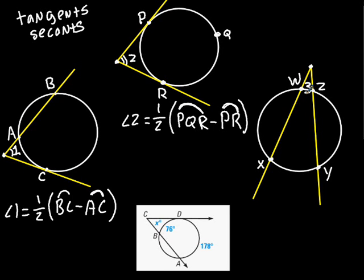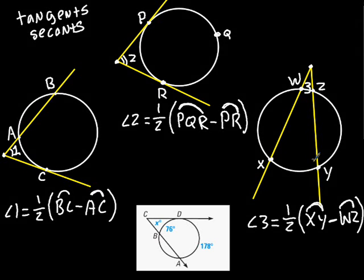My last angle, we can call it angle 3. Angle 3 will end up equaling one-half times the arc XY minus WZ arc. Do you see a pattern here where this angle is the outer angle minus this inner angle? And almost always we divide it by 2. Please find out the answer to this problem and pause it.